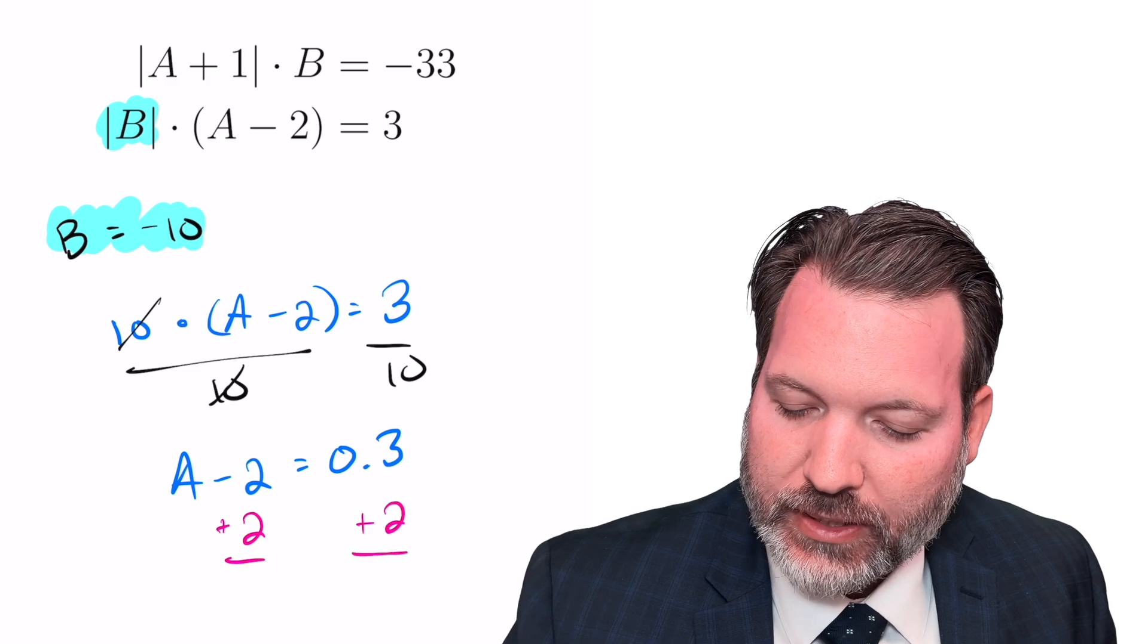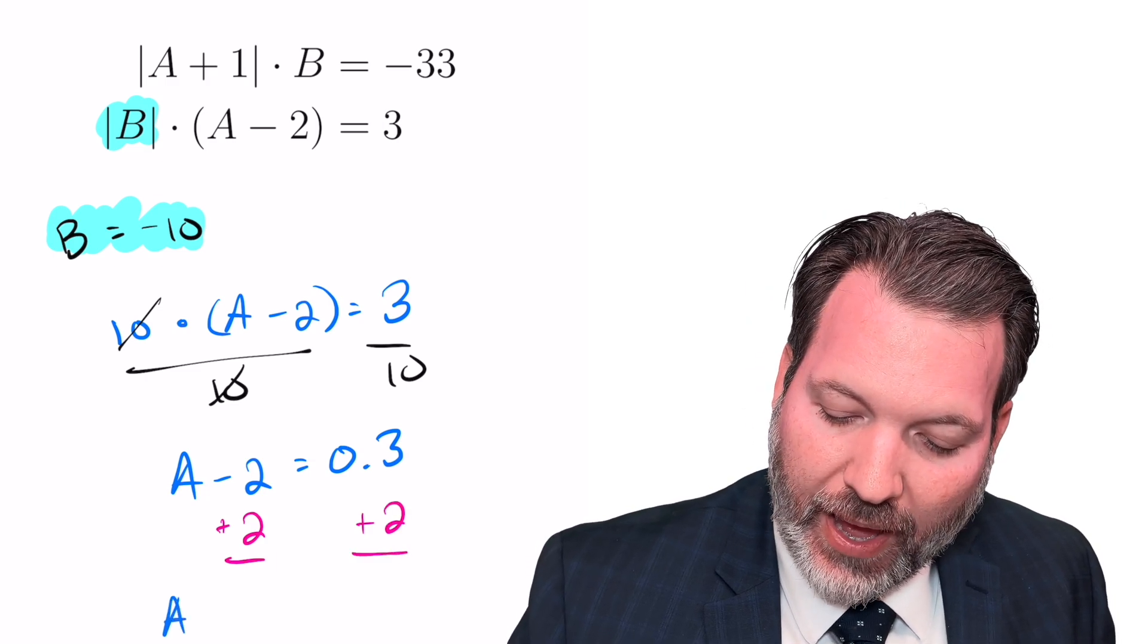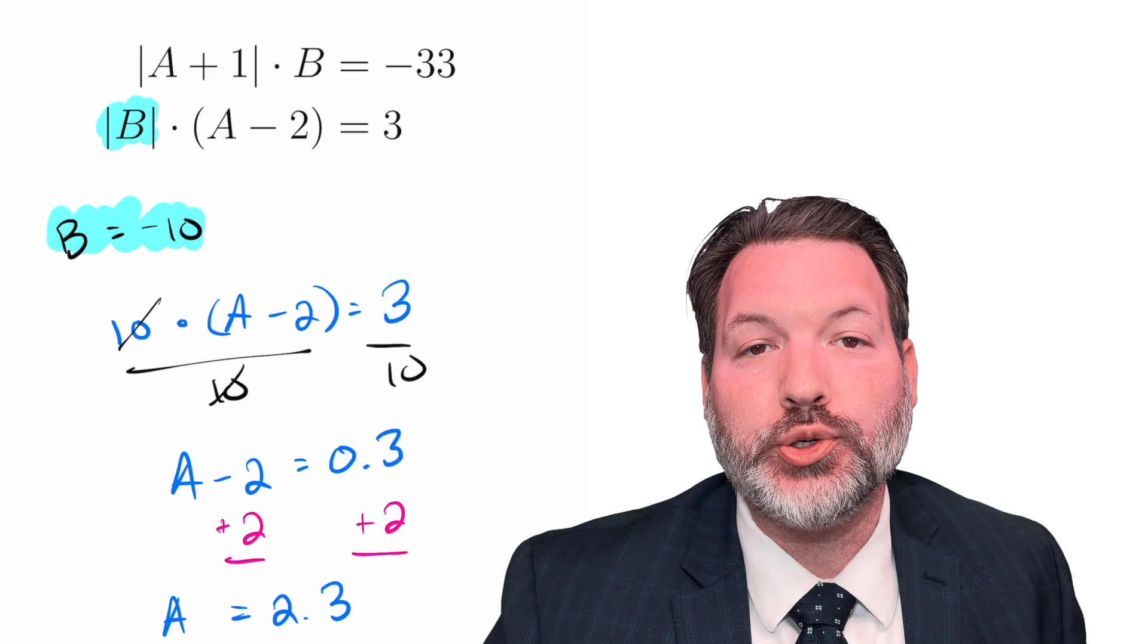And then, of course, to isolate a to get that a by itself, we add 2 on both sides, and we get that a is 2.3.